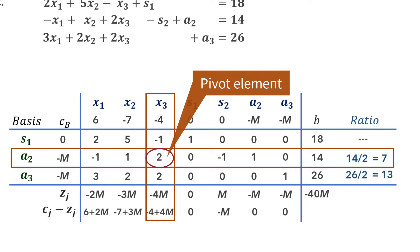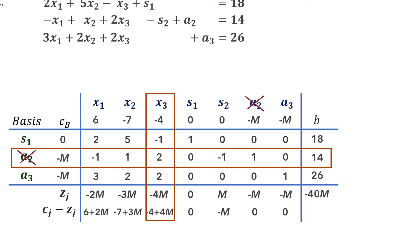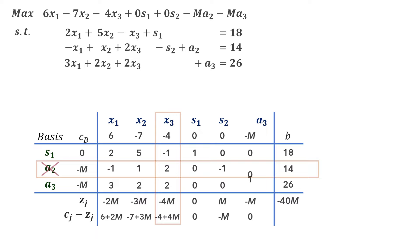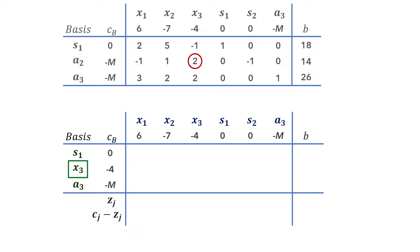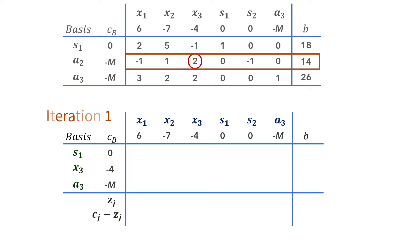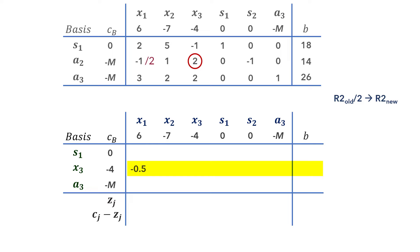Moving forward, a2 will be leaving the basis. Because it's an artificial variable with no real meaning in the solution, it can be removed from the columns altogether. In the new tableau for the first iteration, a2 is replaced by the pivot column variable x3 with objective function coefficient negative 4. We begin this first iteration by dividing the pivot row by the pivot element 2: negative 1/2 gives negative 0.5, 1/2 gives 0.5, 2/2 gives 1, 0/2 gives 0, negative 1/2 gives negative 0.5, 0/2 gives 0, and 14/2 gives 7.